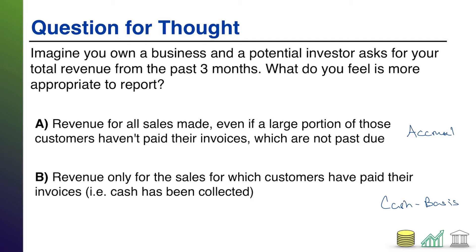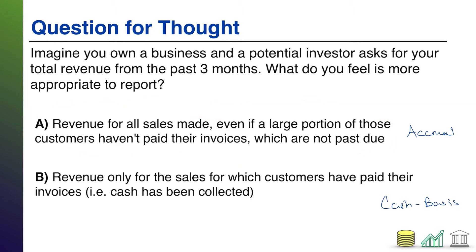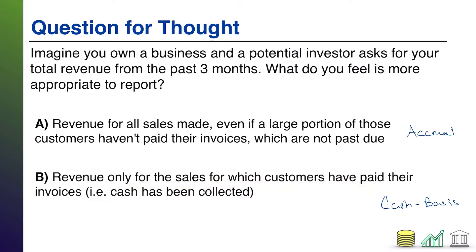The biggest difference between these, as we pointed out, is whether the recognition of revenue is dependent on cash received. In option A, it is not — it doesn't matter if the customer has paid you. You give investors the sales that have been made or fulfilled, even if you haven't gotten paid. That's called accruing the revenue — that's accrual accounting. Cash basis accounting, on the other hand, means the only thing that matters is did you get paid, so you only report the sales for which you've gotten the money.